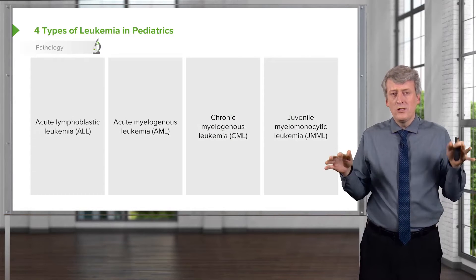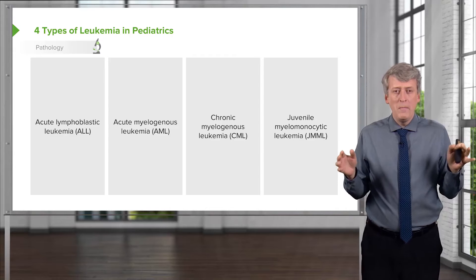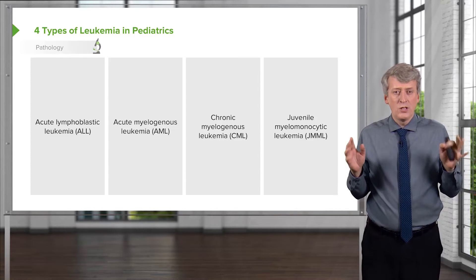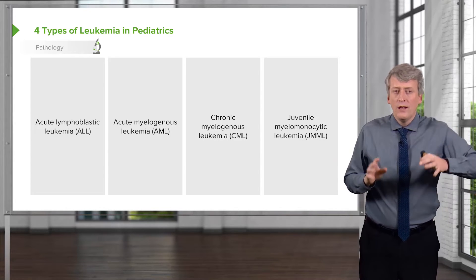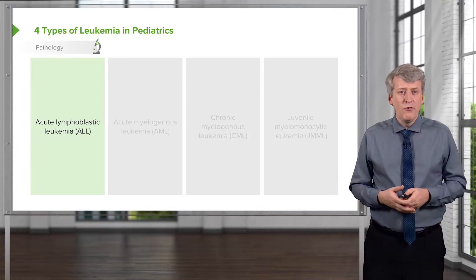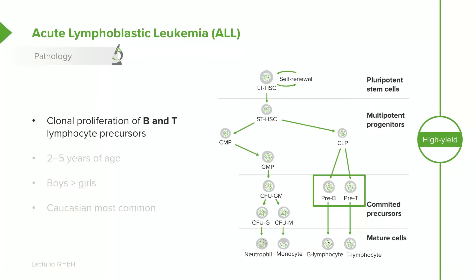We break down leukemia in kids into four major types, and by far the most common are the first two. First, we have acute lymphoblastic leukemia, or ALL. ALL is very common in kids — it's a proliferation of B and T cell lymphocyte precursors. It typically happens in children between the age of two and five, with boys a little more commonly than girls. Caucasians are at greatest risk for ALL.